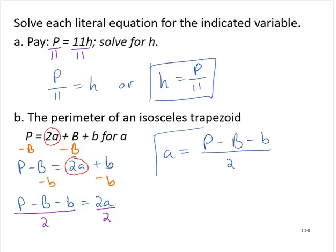Now there's nothing wrong with this. Sometimes, however, you'll see this written in different ways. We could write this as a equals capital P over 2 minus capital B over 2 minus lowercase b over 2.